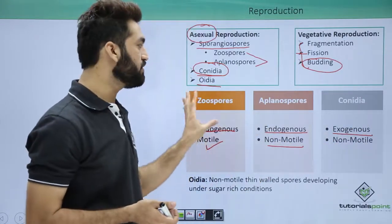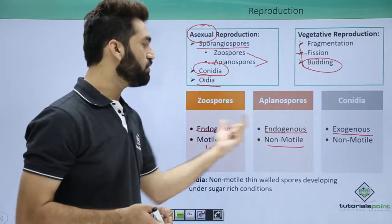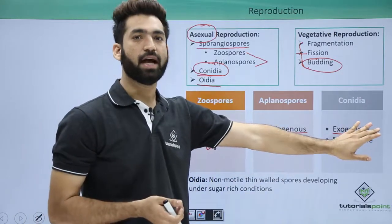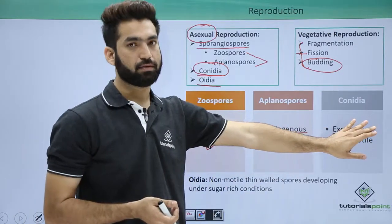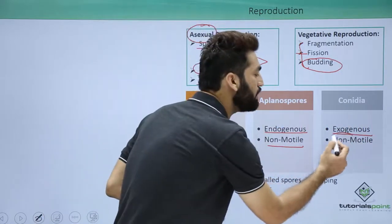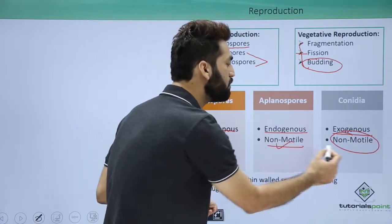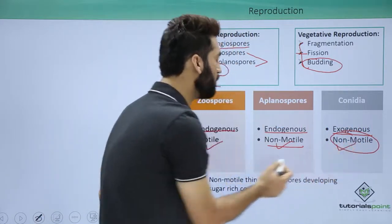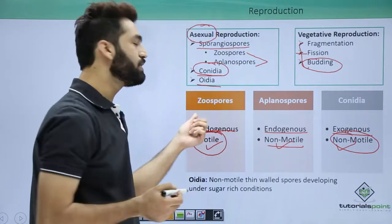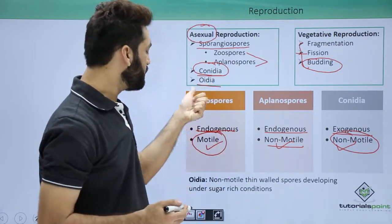Sporangiospores are endogenous, while conidia are exogenous — that is one of the key differences between them. Conidia are also non-motile. Among all the spores, only zoospores are motile.